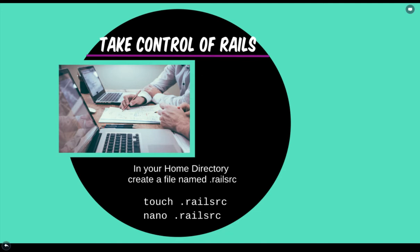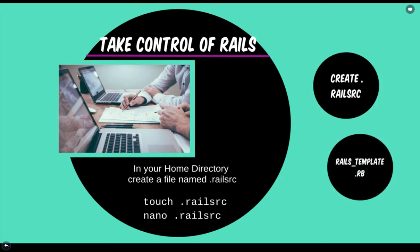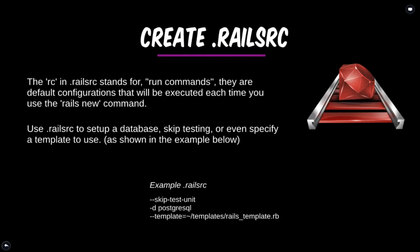The best way to do it is to create a Rails RC file. Now that's a hidden file, so it's going to need a dot in front of it — so it's going to be .railsrc. In your home directory, you create a file called .railsrc. The RC in Rails stands for Run Commands — they're default configurations that will be executed each time you use the rails new command.